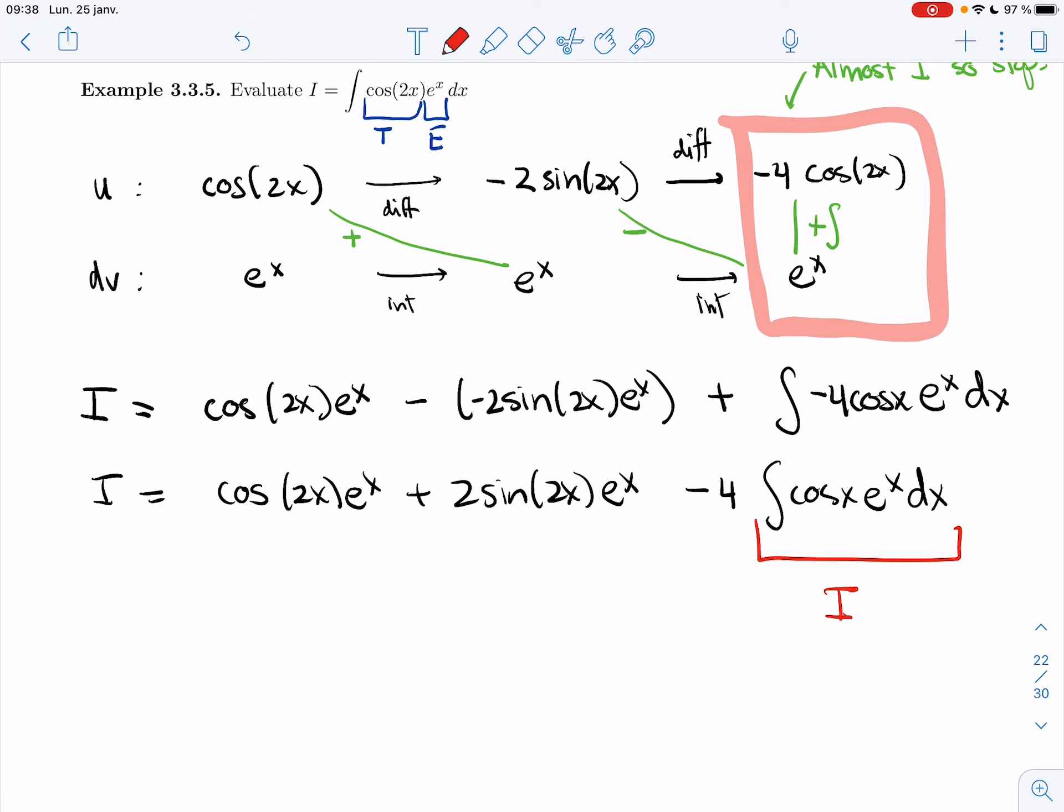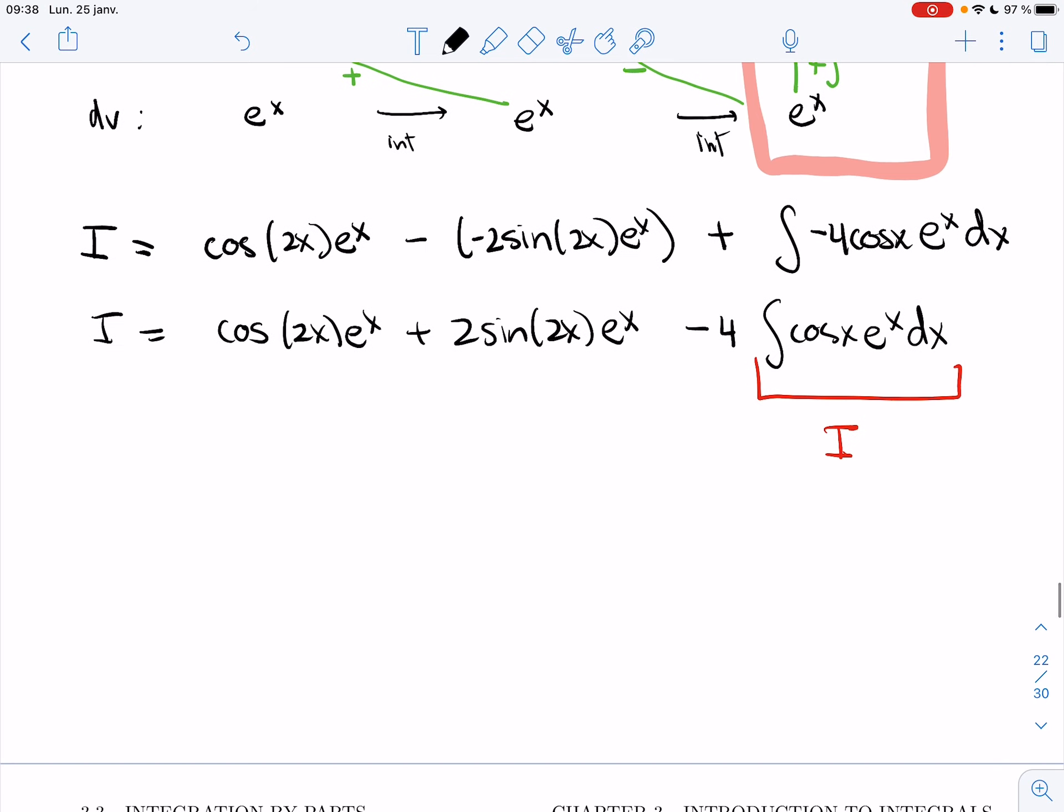All right, a bit strange, but it works. All right, so I'm going to send the minus 4I to the other side. So let me rewrite it one more time. cos(2x)e^x + 2sin(2x)e^x - 4I. So if I send it to the other side, I get I + 4I. That's 5I.